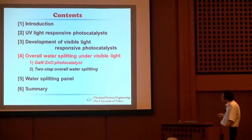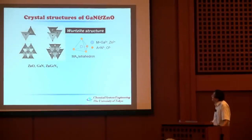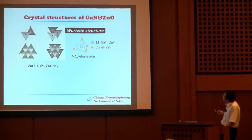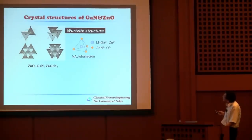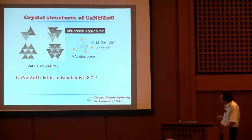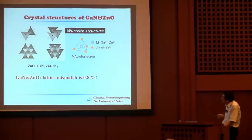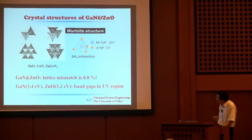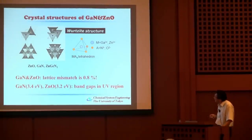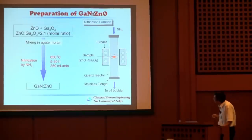Now, overall water-splitting under visible light irradiation — first, gallium nitride zinc oxide solid solutions. Gallium nitride is well known as a blue light emitter with a wurtzite crystal structure. Interestingly, ZnO also has the wurtzite structure and a very similar lattice constant to GaN — lattice mismatch of only about 0.8%. However, both materials have band gaps in the UV region. If we mix them, we obtain different optical absorption.